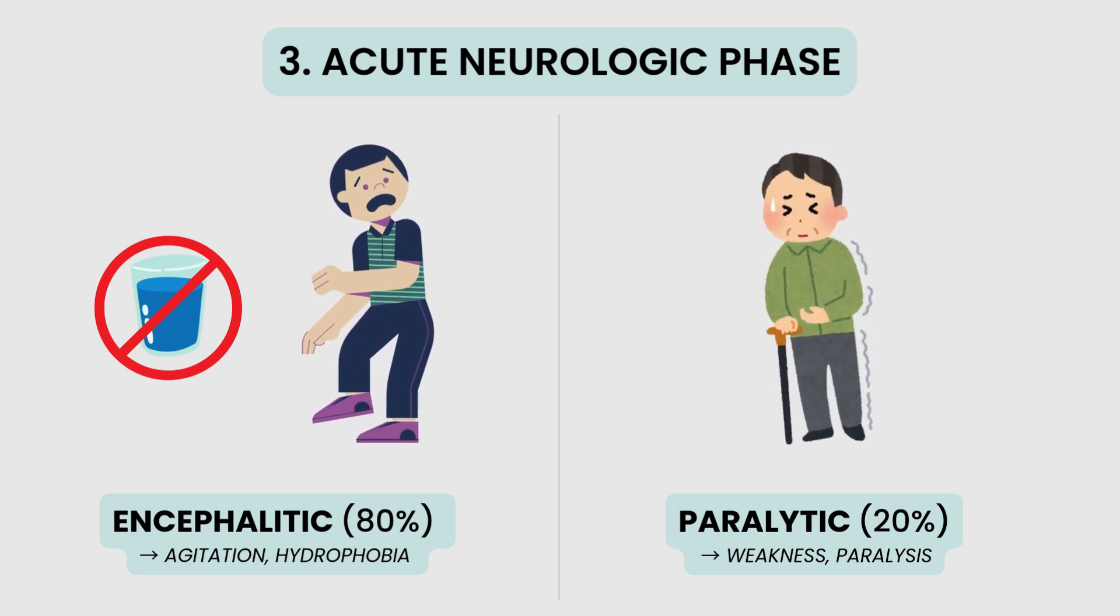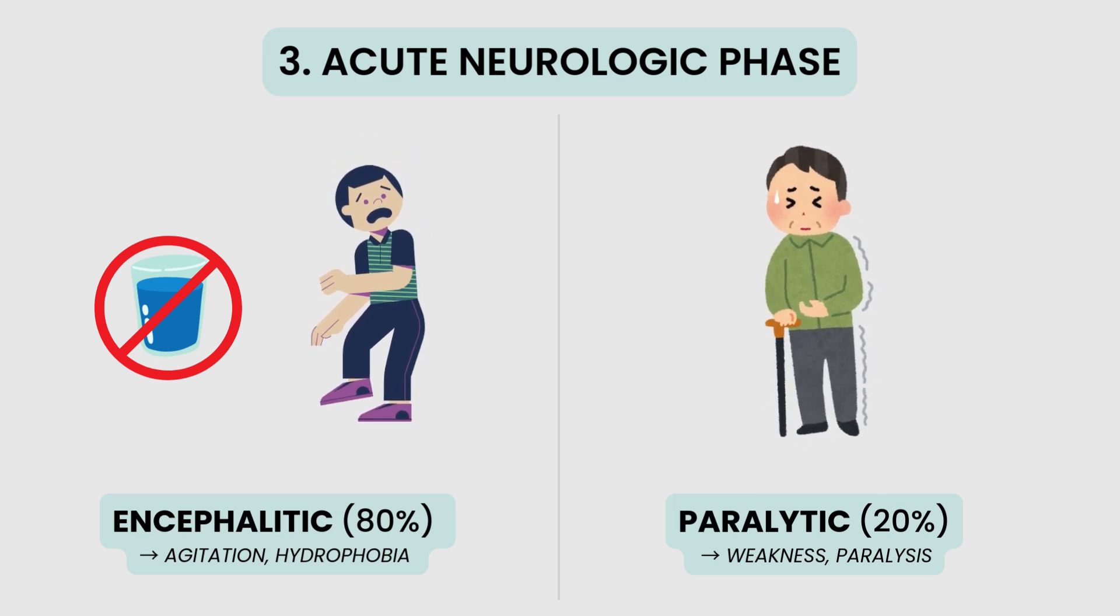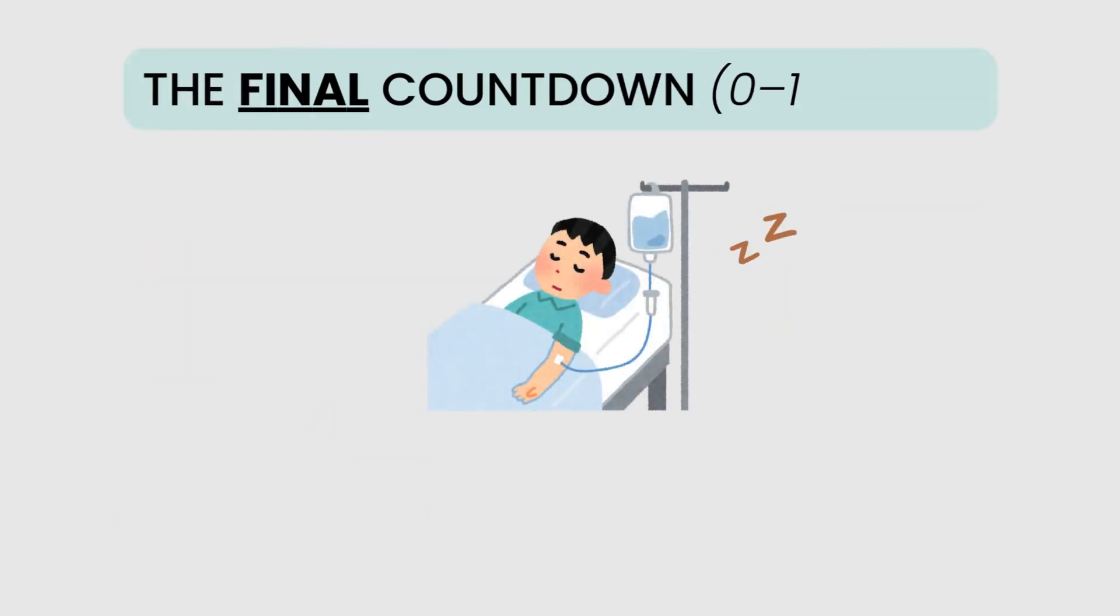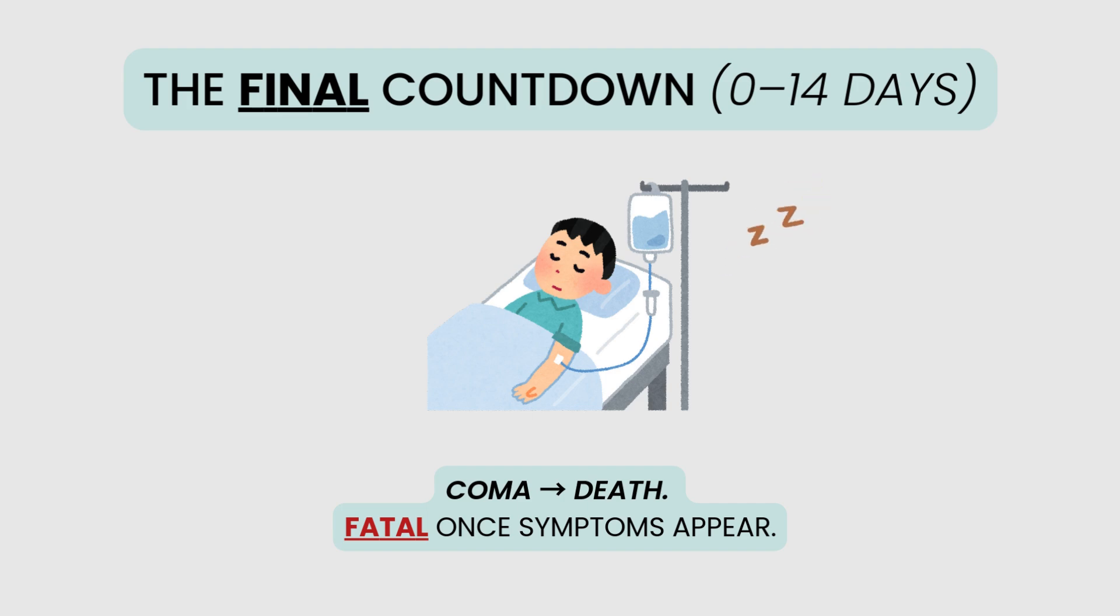The paralytic form, seen in about 20% of cases, instead causes progressive limb weakness and paralysis. Finally, rabies ends in a coma and death within 0 to 14 days. Recovery is exceedingly rare and once symptoms appear, rabies is almost always fatal, making immediate treatment after exposure absolutely critical.